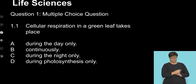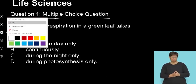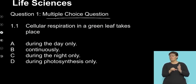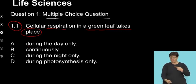Question one, as I always do, start off with some multiple choice questions. In this segment it's important that we try and understand some basic concepts as we unpack them using cellular respiration. So the first question, cellular respiration in a green leaf takes place. A, during the day only, continuously B, C, during the night only, and D, during photosynthesis only.